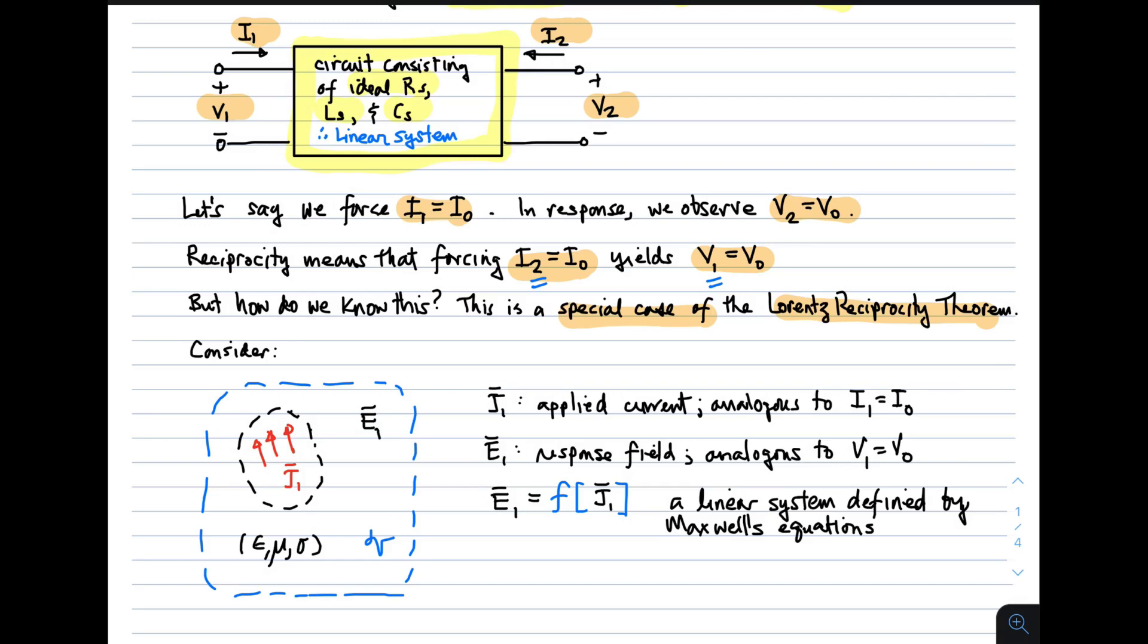So here is the Lorentz Reciprocity Theorem. Consider some region of space, and we'll give that region of space a name, V, referring to volume. And in that space, we have sources, described as currents. So the currents are identified as J1. We'll call this an applied current, referring to the fact that it's a source. And note that this is analogous to saying that the current applied to the port of the circuit above is equal to some known value. In response, we get a radiated electric field E1. And E1 is a response, so we can think of it as an output. And it's analogous to seeing that the voltage observed at a port is equal to a predetermined voltage. And it's analogous to the statement V1 equals V0 in the previous experiment.